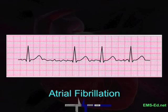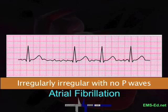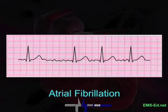Atrial fib is the chaotic firing of random cells within the atria that become pacemaker cells in a totally haphazard way. The result is no discernible P wave. When I ask for a description of AFib, folks respond that it's irregularly irregular — but that's only half the answer. AFib is an irregularly irregular rhythm with no discernible P waves. There are other ECGs that are irregularly irregular and they are not AFib.